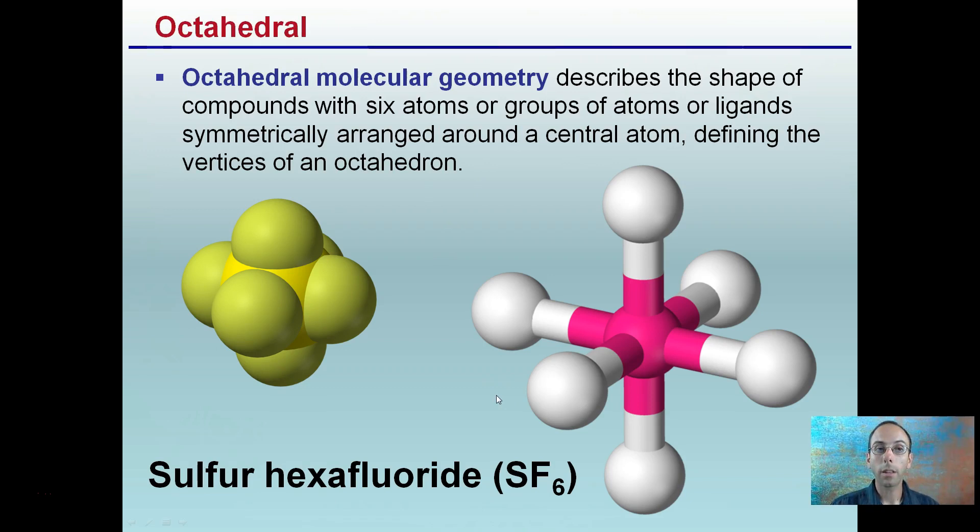The last one here, octahedral. An octahedral molecular geometry describes the shapes of components with six atoms or groups of atoms or ligands symmetrically arranged around a central atom defining the vertices of an octahedron. What the heck does that mean? Well, let's break that down as an easy way to recognize it. Sulfur hexafluoride is an example.